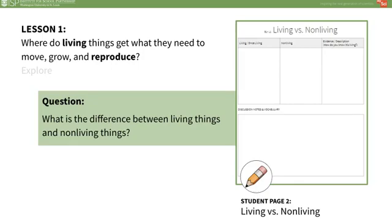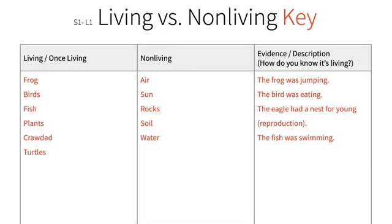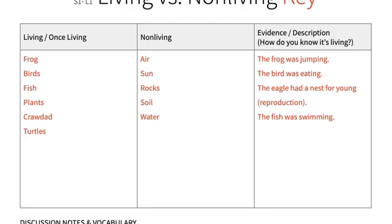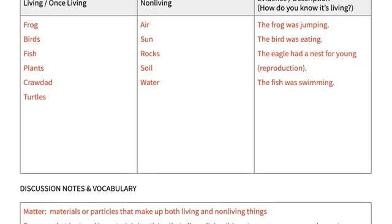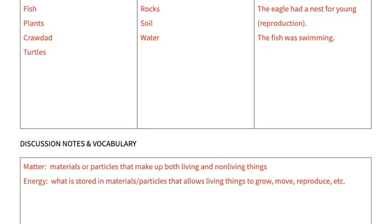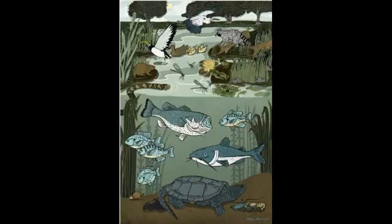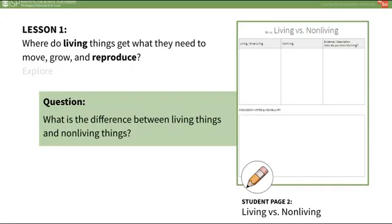In the explore portion of this lesson, students will classify living and nonliving objects. Students should use the living vs. nonliving sheet on Student Page 2 to create a chart about living and nonliving things. Students should include once-living but now dead things in the living category. Next, have student groups use the pond posters to identify living and nonliving things on Student Page 2. They can also include items not explicitly shown on the poster, such as the sun, rocks, or the air. After identifying living and nonliving things in their groups, have them identify how they knew something was living and what the living things are doing to survive.